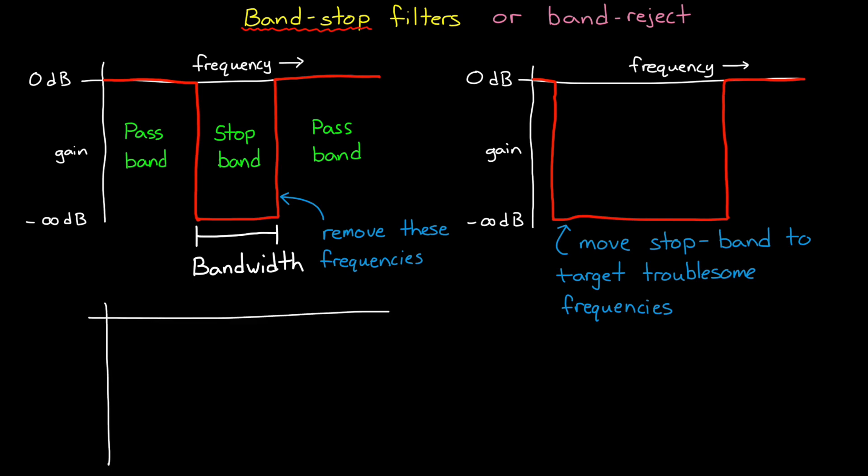With that in mind, a notch filter is simply the name given to a really narrow bandstop filter, one that attempts to attenuate just a few hertz or so. Notch filters are useful if you want to filter out very specific noise.